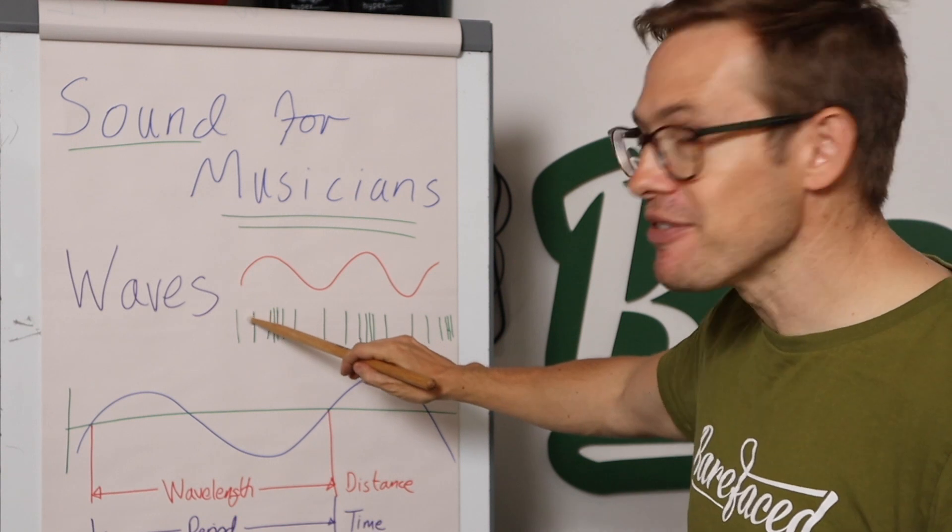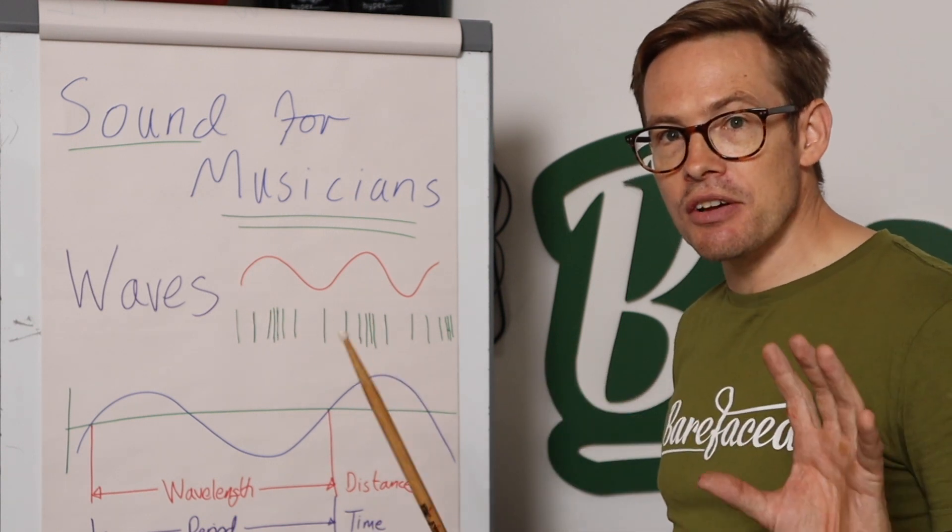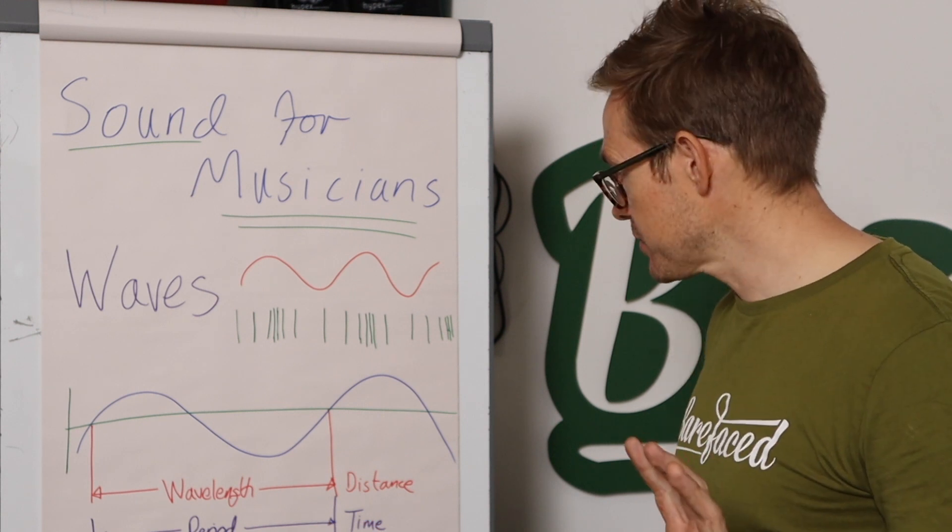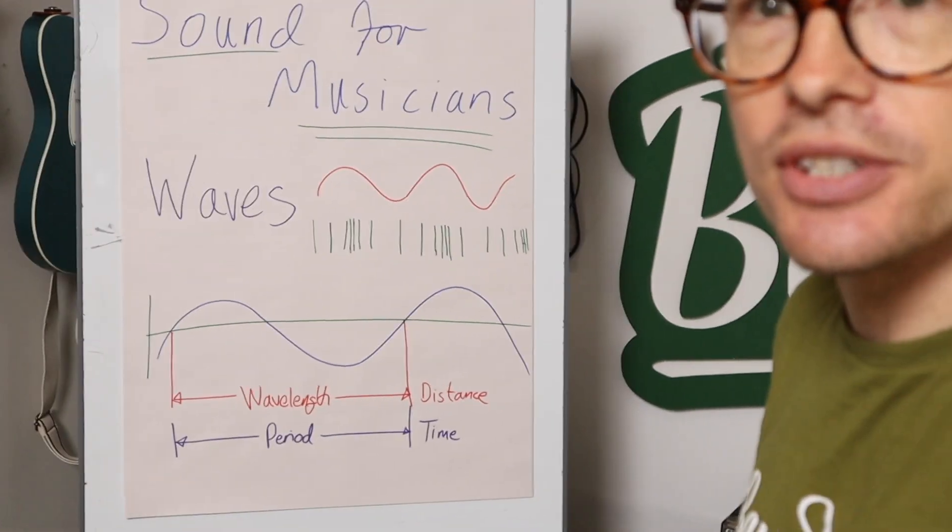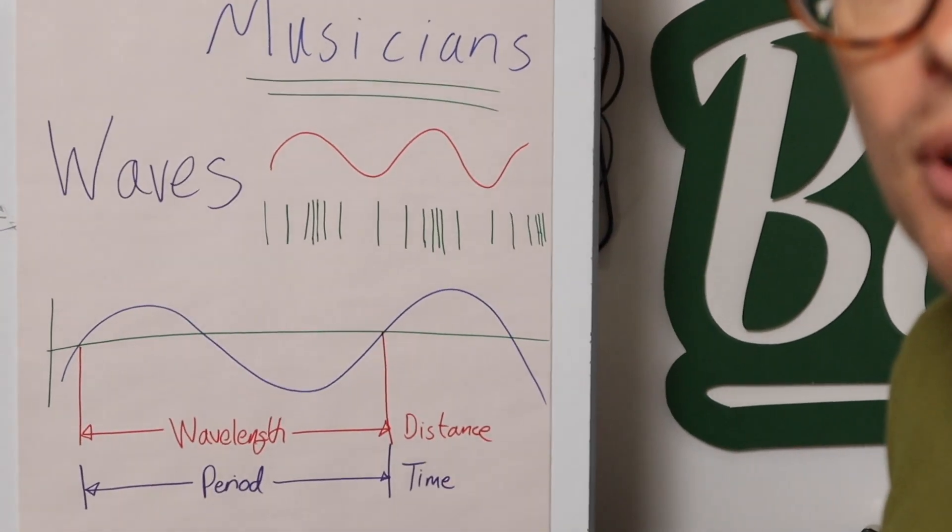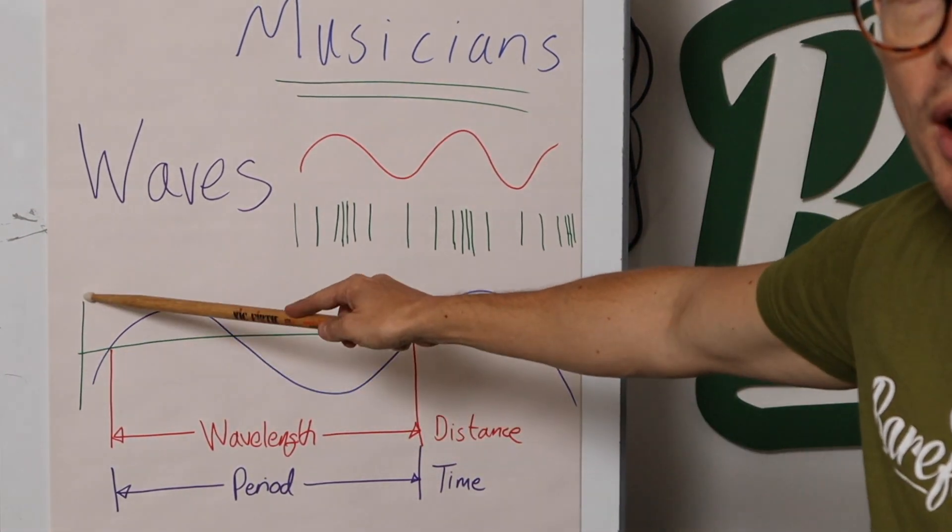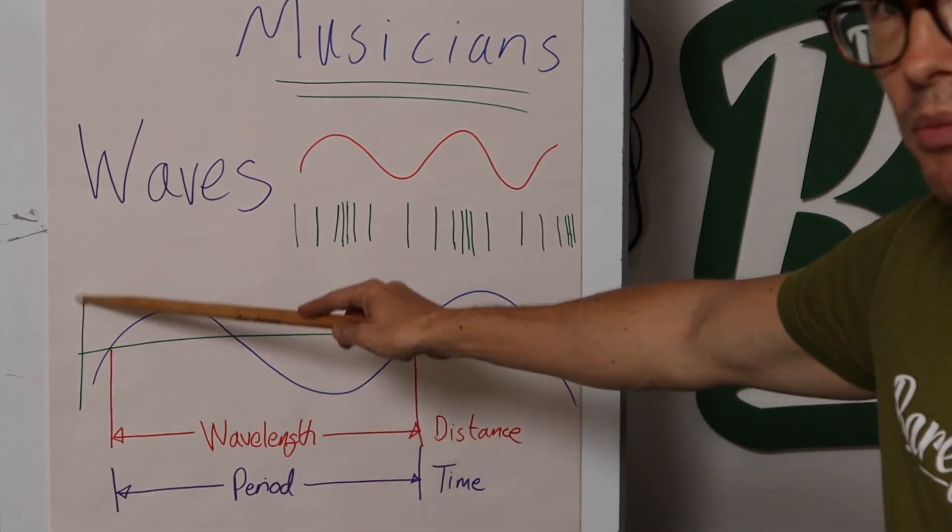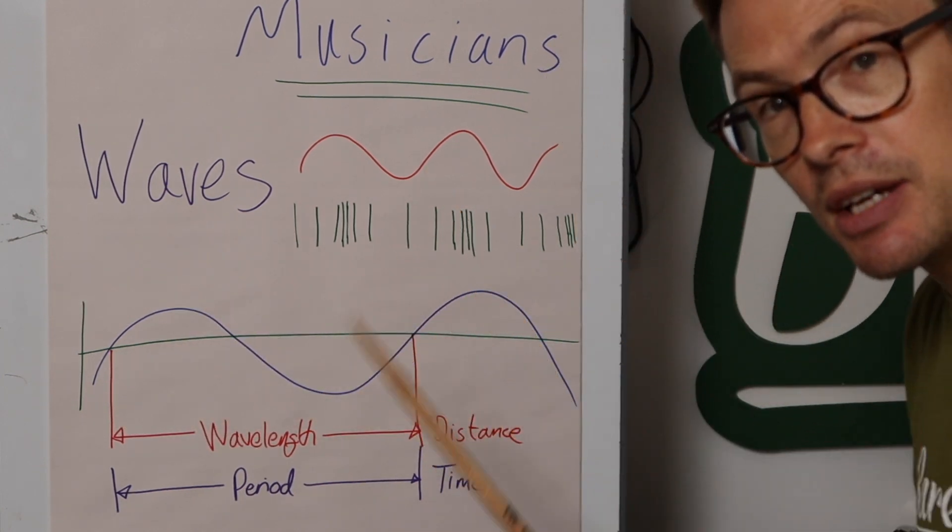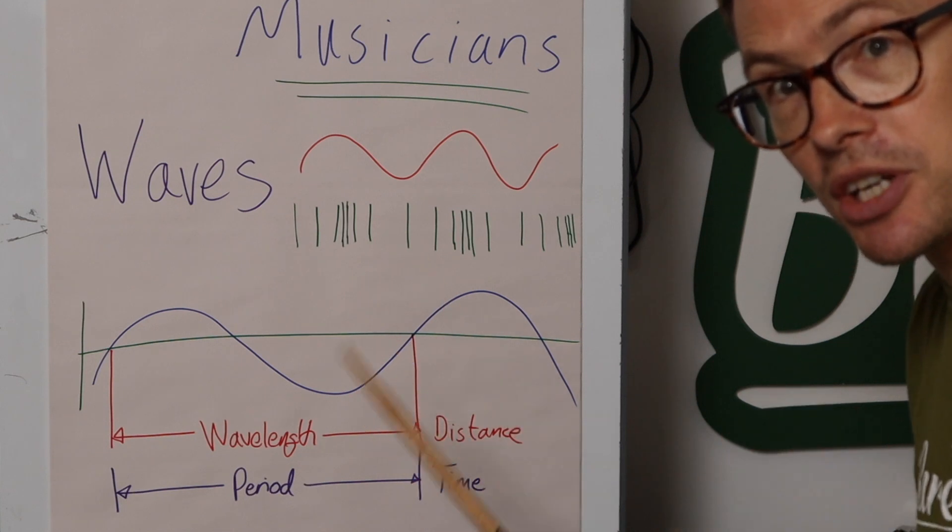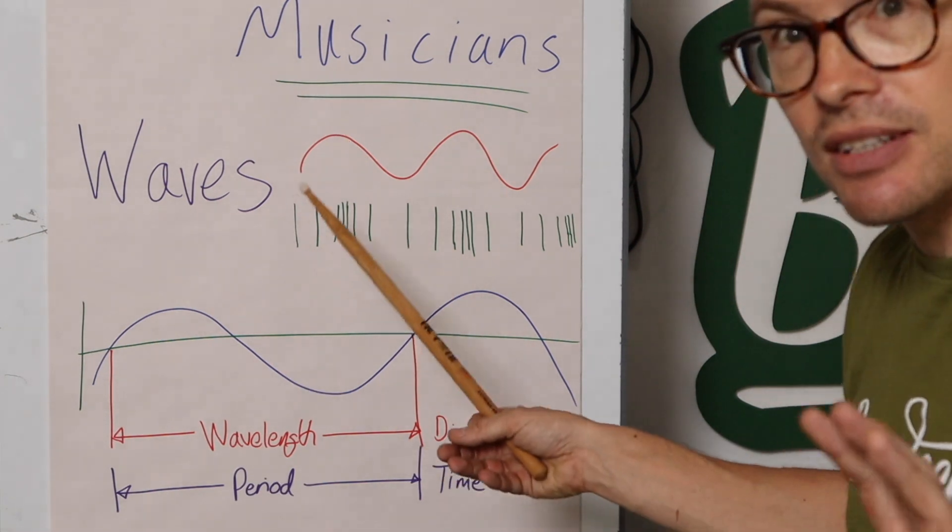So we've got our wave. This here, the y-axis, that's the amplitude of the wave. We're denoting it as a transverse wave because it's easier to understand. But remember, sound is always a longitudinal wave. We can't change that. Electrical waves, they're transverse waves. But this is a longitudinal wave.